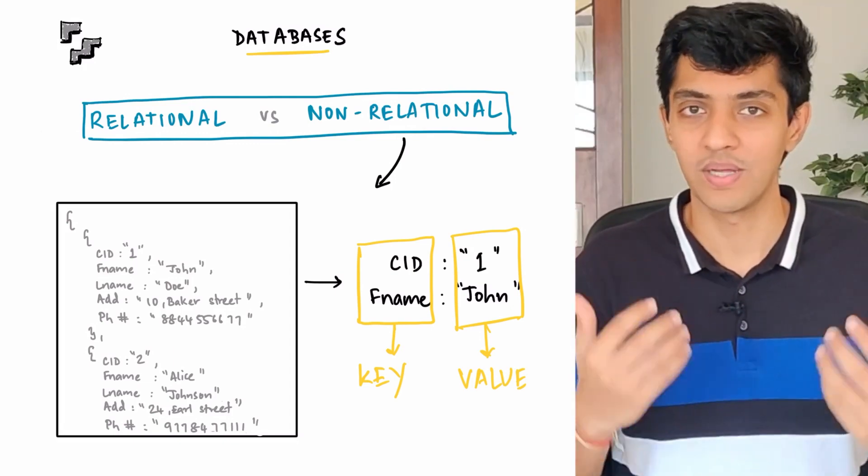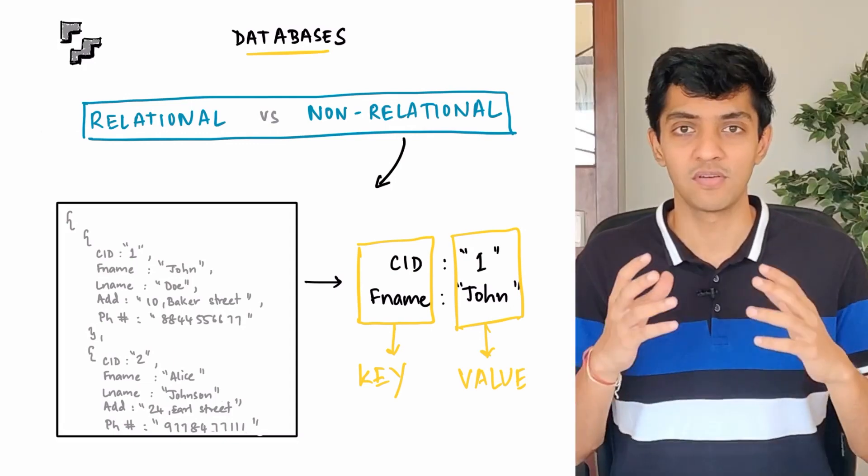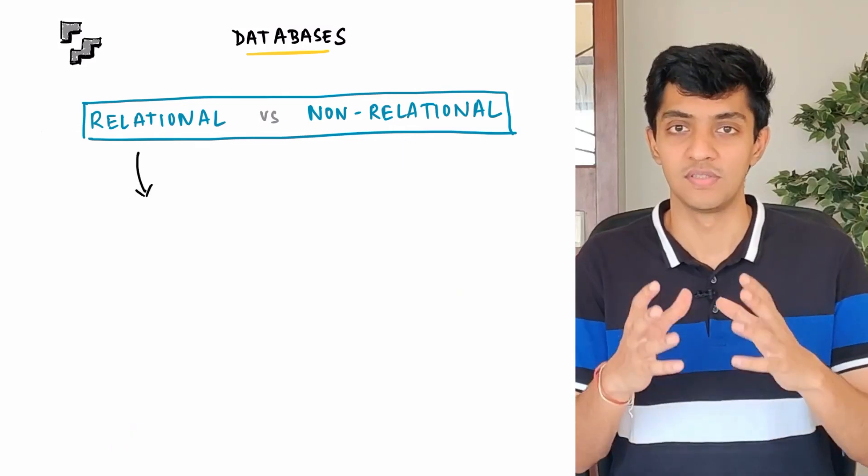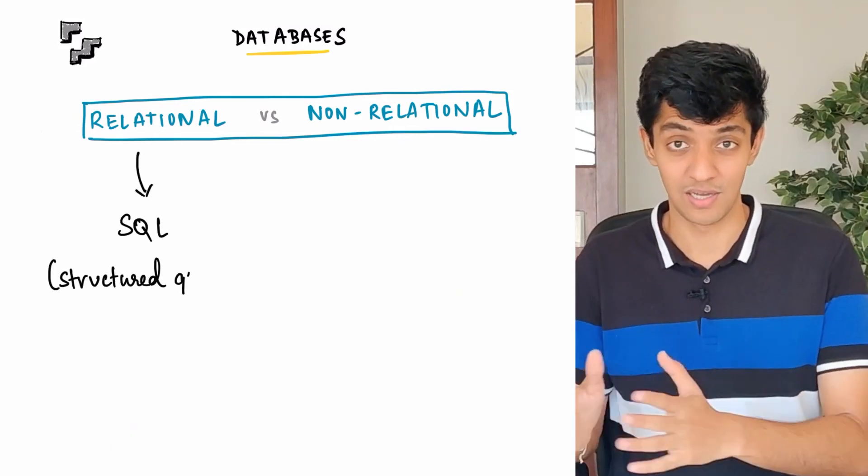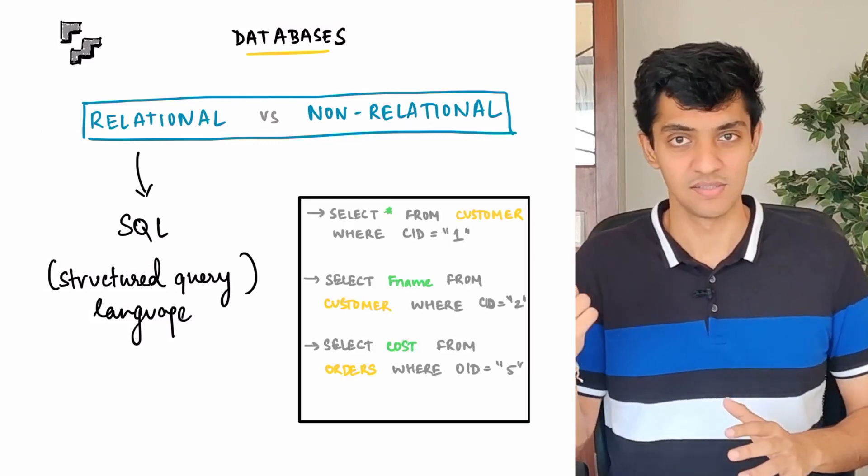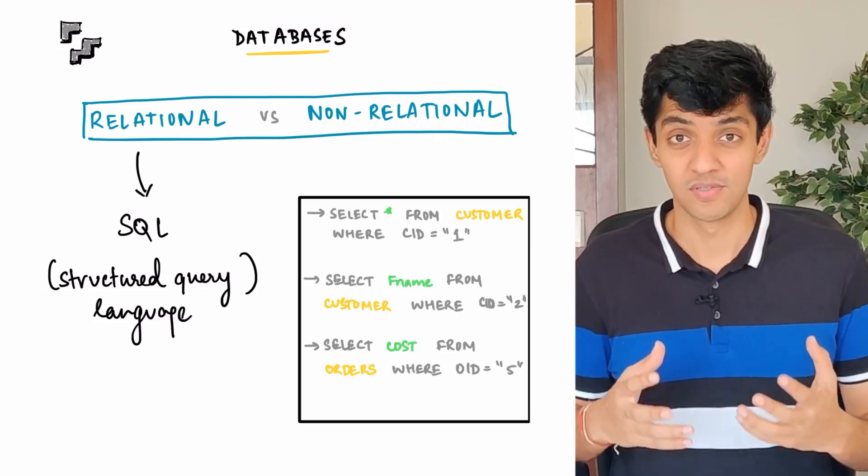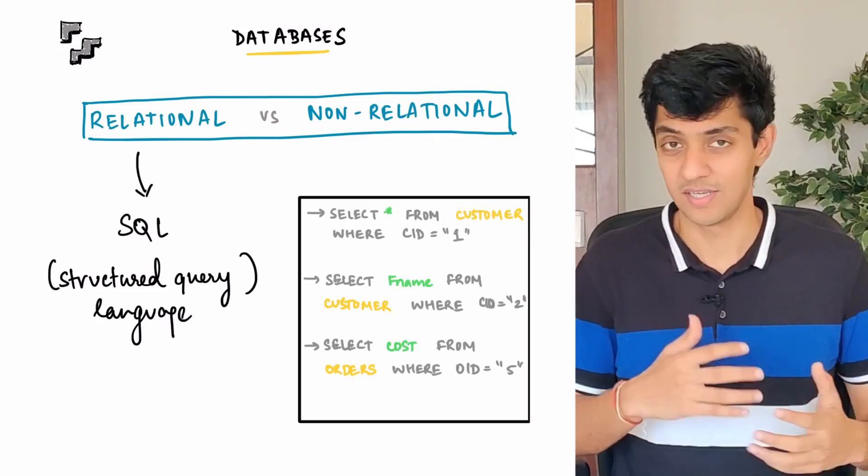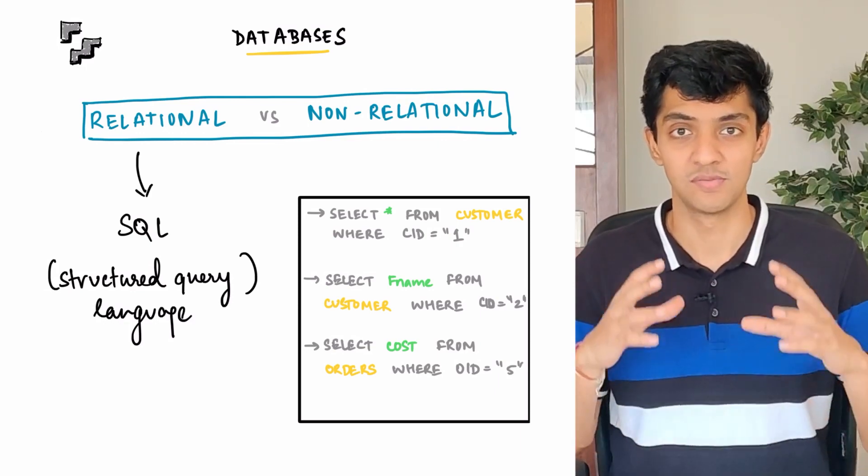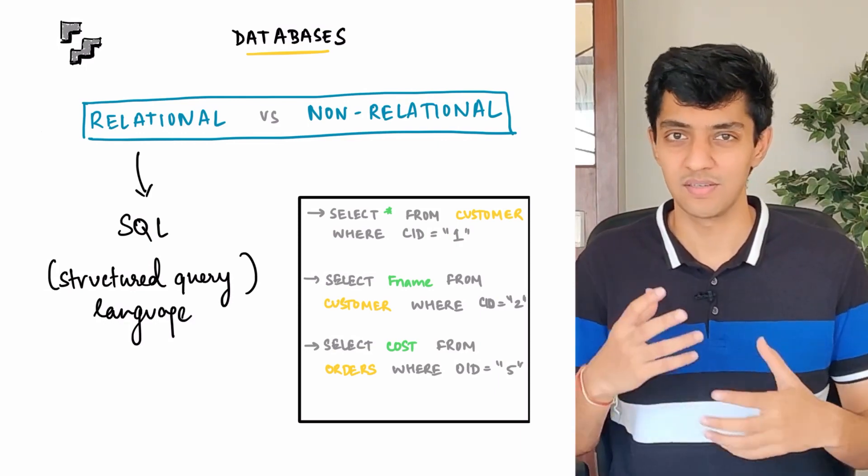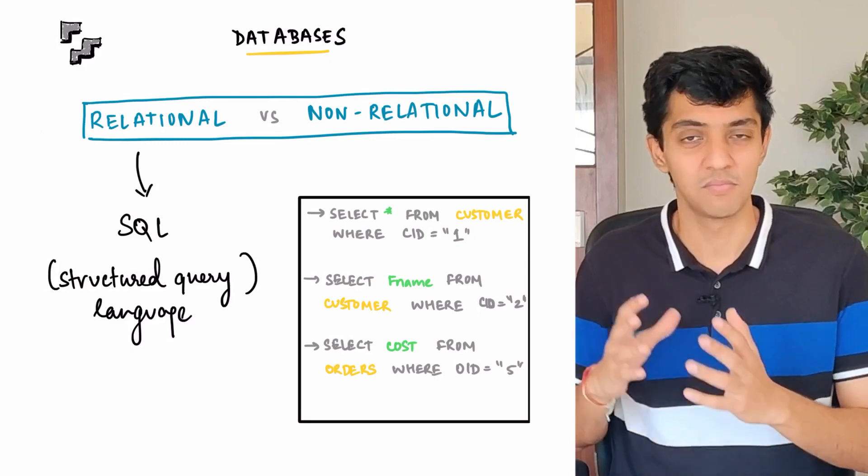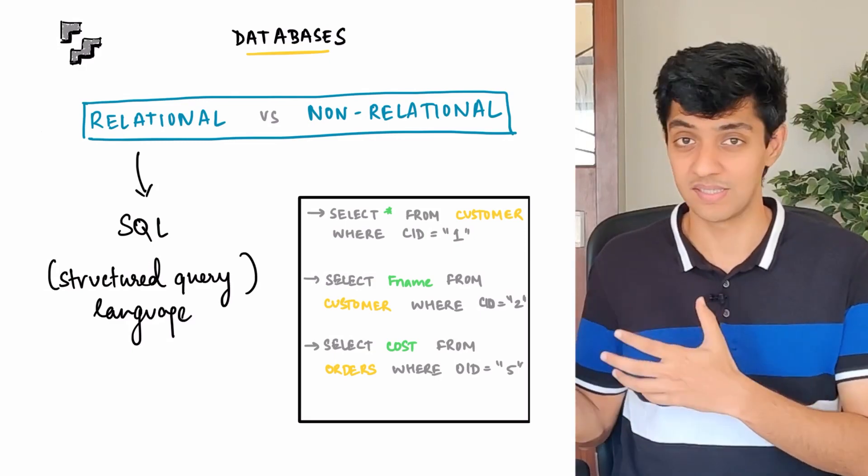Now you might be asking, how do I query data from the two databases? For relational database, you can use SQL, which is structured query language. SQL queries would look something like this. Now you don't have to worry too much about why they look this way and the syntax of it all. I'm going to be putting out another video specifically on SQL queries and writing SQL queries. All you need to do is just take a brief glance at how this essential syntax looks like.